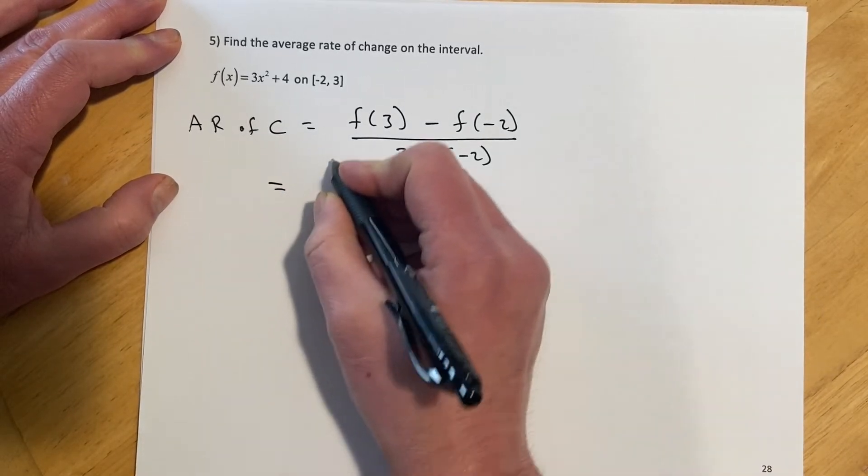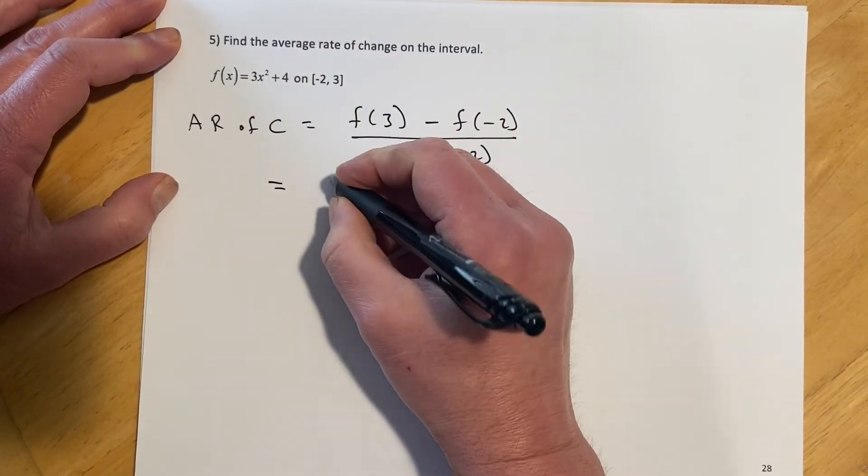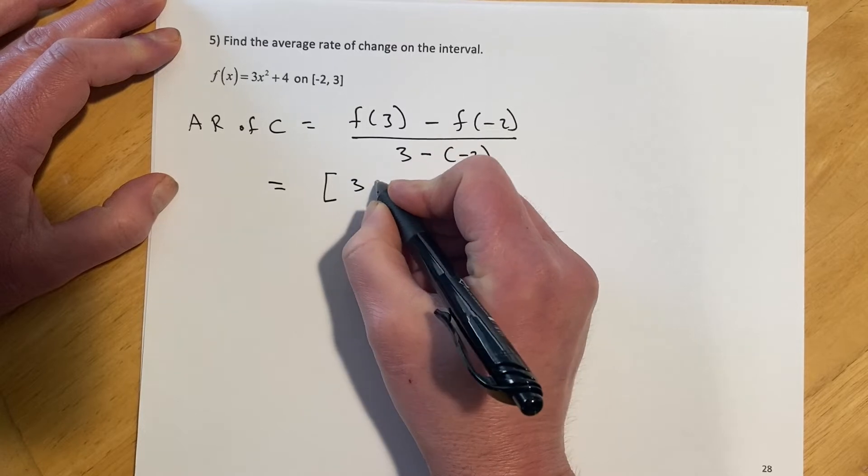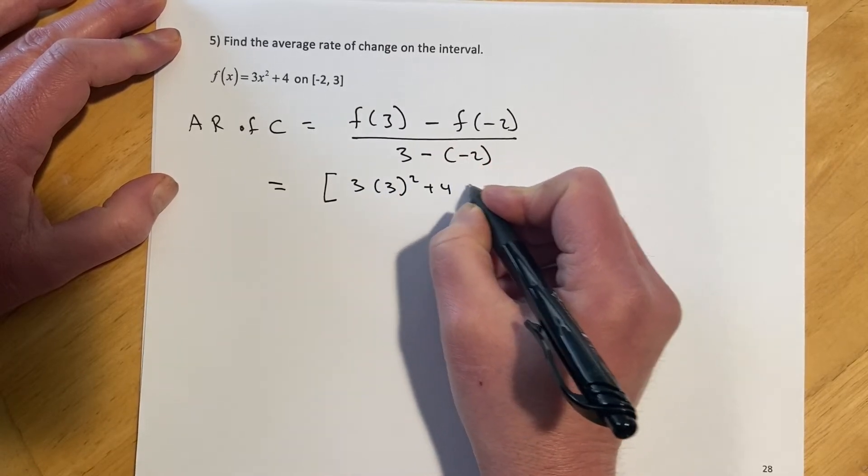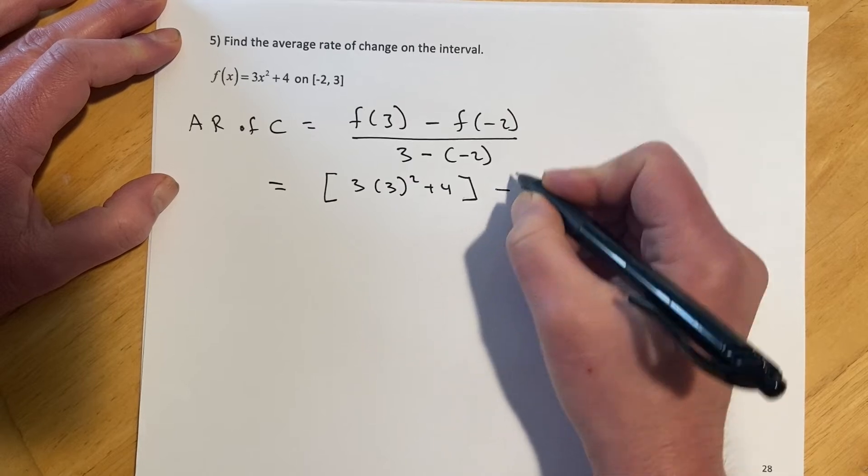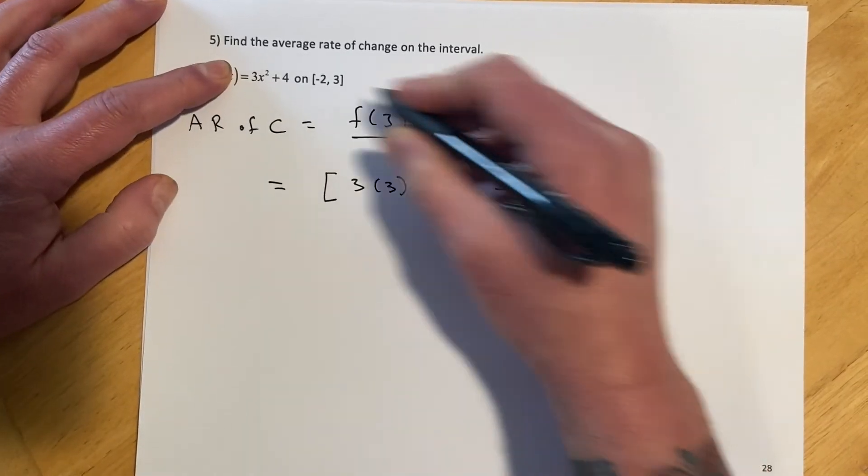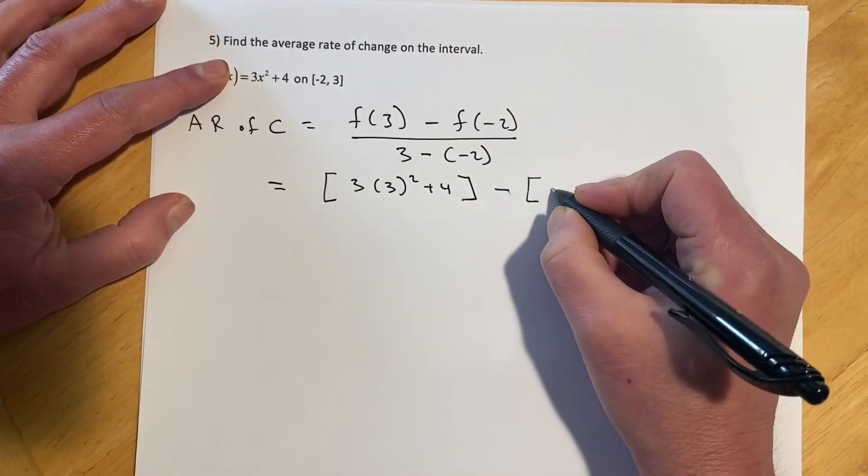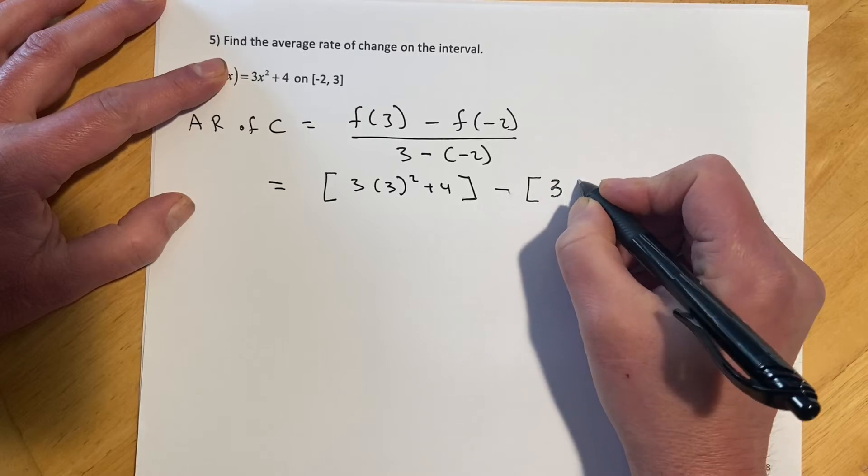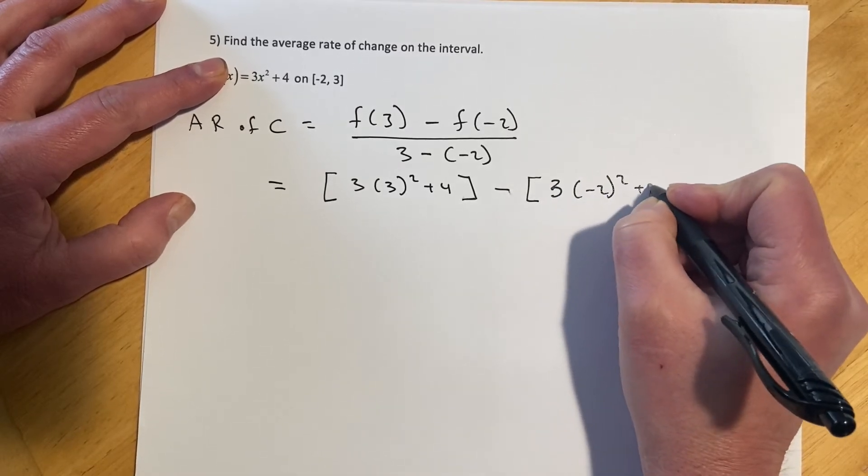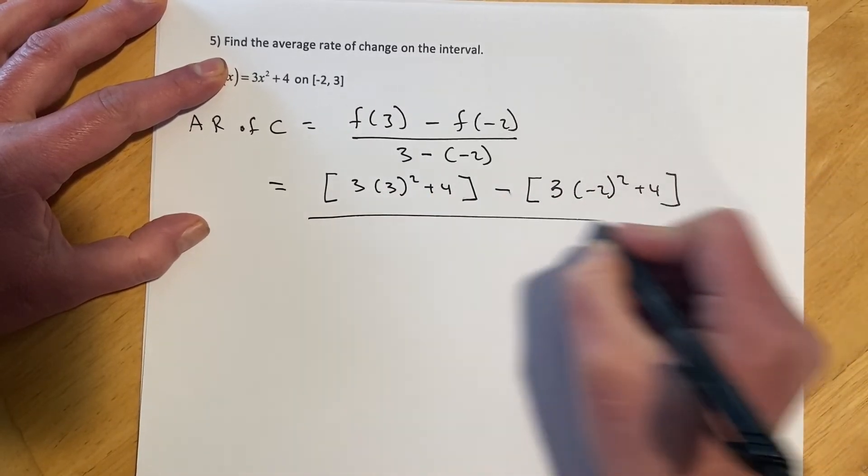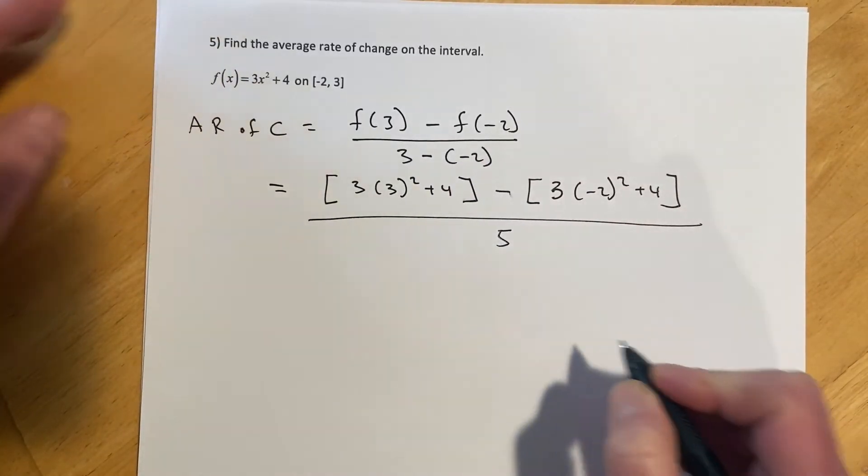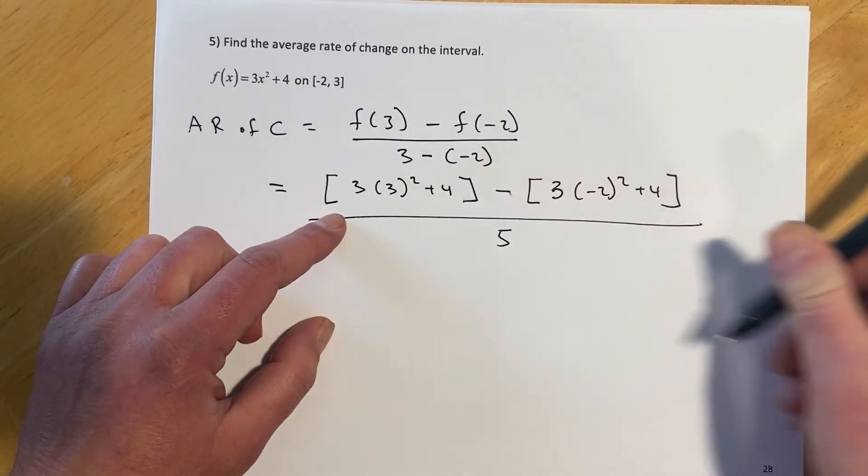And that's going to look like this evaluated at 3 minus this same thing evaluated at negative 2, all over 3 minus negative 2, which will come out to a 5. I forgot to say in the last example,